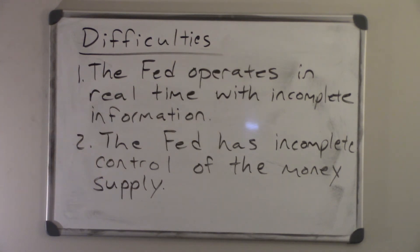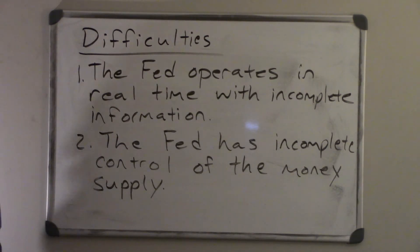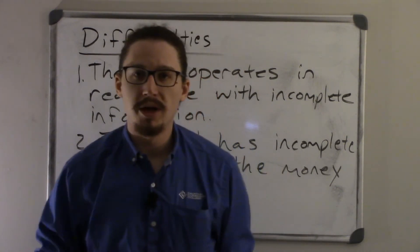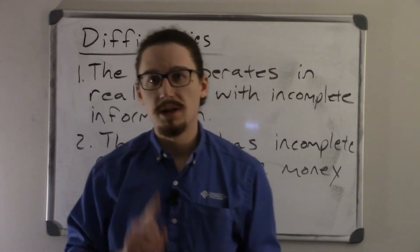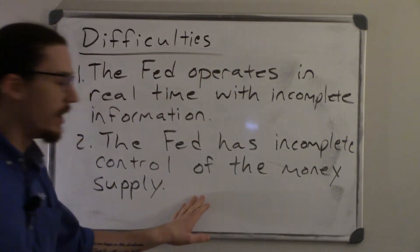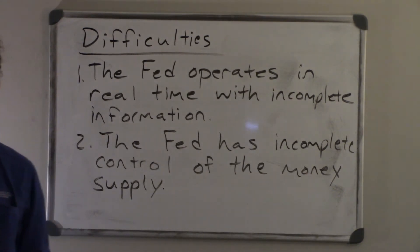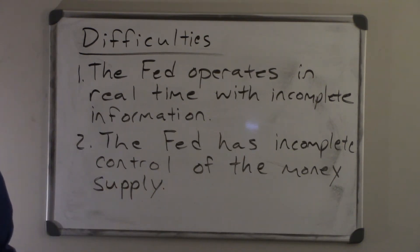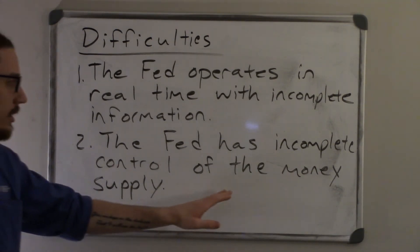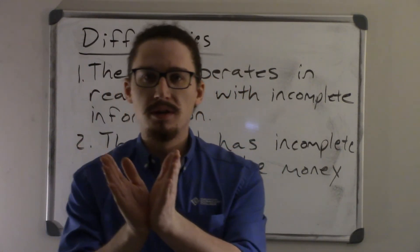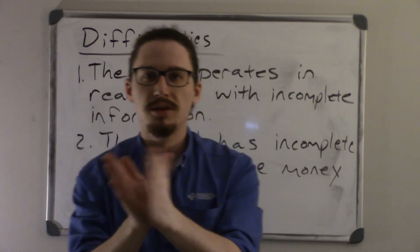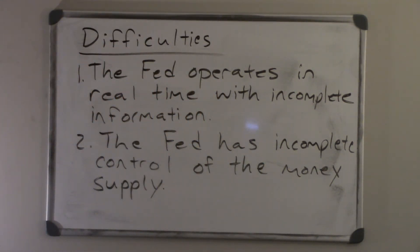The second difficulty: the Fed has incomplete control of the money supply. Thinking back to the last chapter and those definitions of the money supply — the Fed had total control of the monetary base, which is currency and total reserves. That's the only thing the Fed has complete control over. But M1 and M2 have a big impact on the money supply. The Fed is trying to direct the big part — the wide part of that triangle — with just the small end at the very bottom.